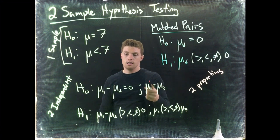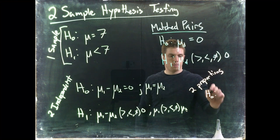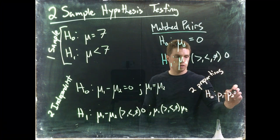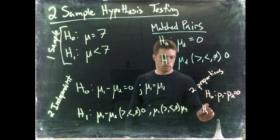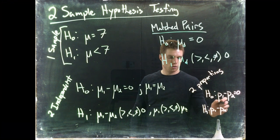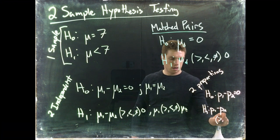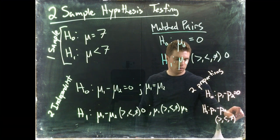The null hypothesis is going to be p1 minus p2 equals zero. And the alternative is just going to be p1 minus p2. And then we've got greater than, less than, or not equal to zero.